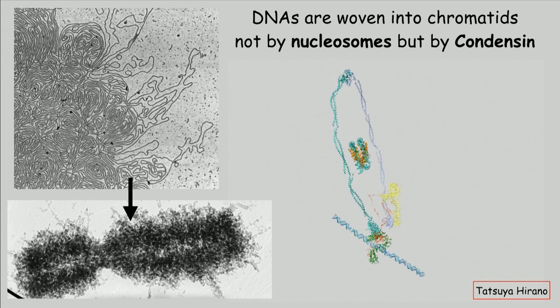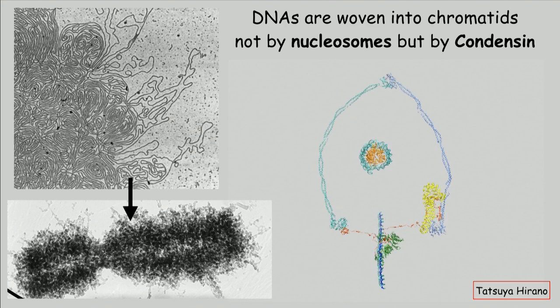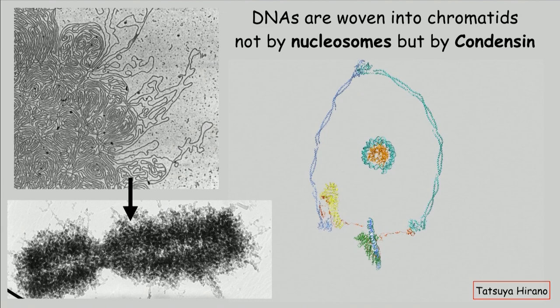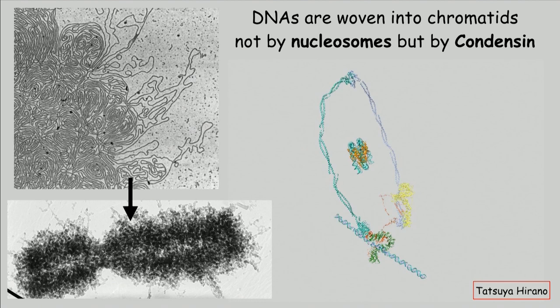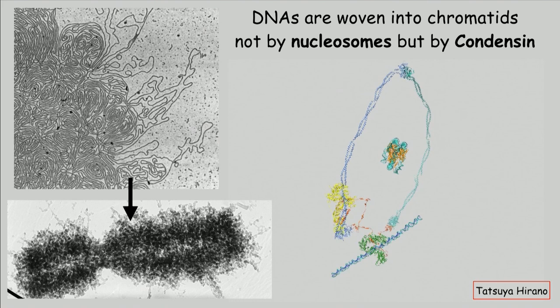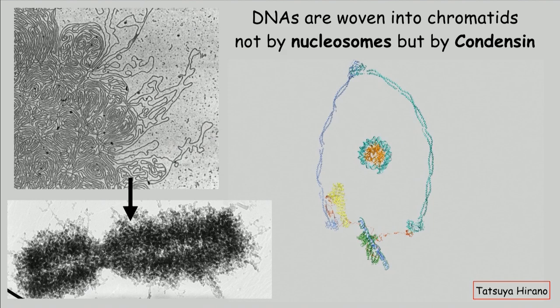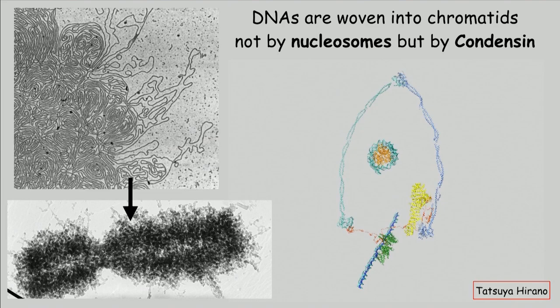It turns out, largely from the work of a very talented Japanese scientist, Tetsuya Hirano, that DNAs are packaged into chromosomes not really by nucleosomes alone — nucleosomes can't build a chromosome for you. What Hirano managed to do is identify a completely different protein machine that can take all this tangled mass of DNA and turn it into a chromatid. This machine is called condensin, and it actually looks very similar to the cohesin complex.